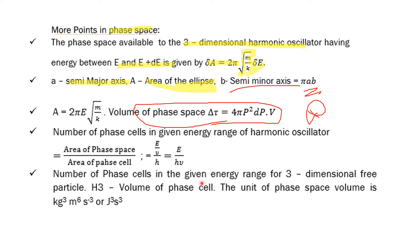The number of phase cells in the given energy range for 3-dimensional free particle: h³ is the volume of phase cell. The unit of phase space volume is kilogram meter cubed second to the power of minus three. This is very important - the unit of phase space volume.